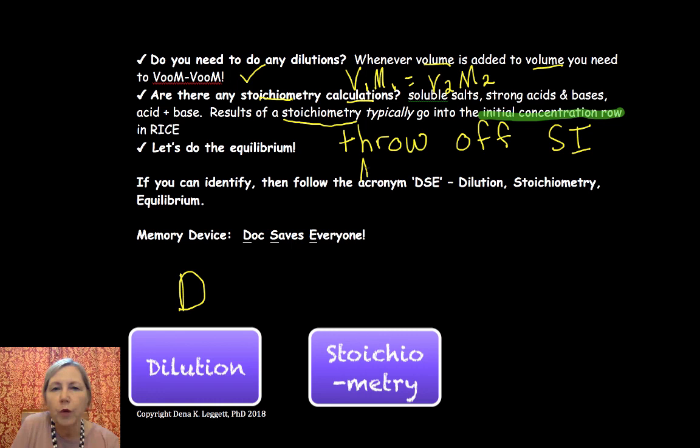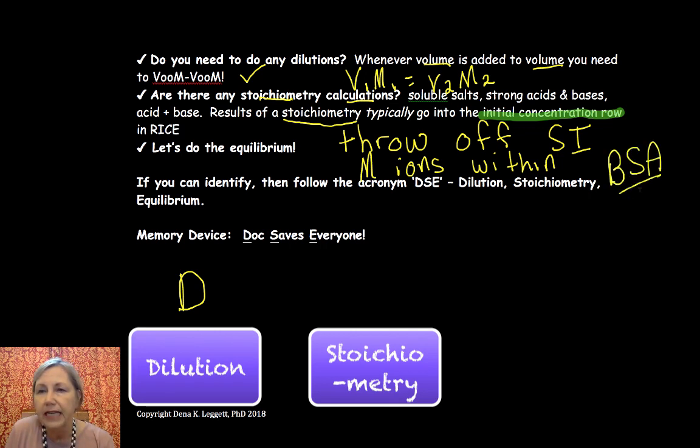Be able to go to molarity of ions within very quickly. You don't want to have to set up, honestly, if it's avoidable, you don't want to have to set up what I call a BSA table and go through all of that detail. It's just too much detail and you don't have enough time. So if you can learn to throw off spectator ions and work molarity of ions within, that will help you a lot.